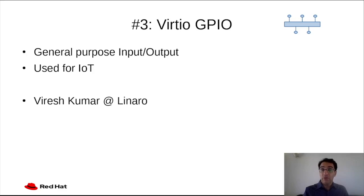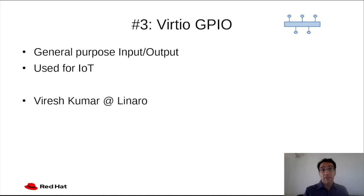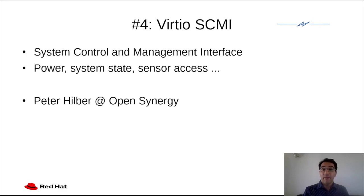GPIO is, of course, a general-purpose input-output device, which is widely used in embedded and Internet of Things configurations. Viryash Kumar from Linaro added support for the Virtio GPIO device to the specification. Next, system control and management interface is a management interface present on ARM systems. It allows managing power, system state, sensor access, and more. Thanks to Peter Hilber from OpenSynergy for adding this device to the specification.